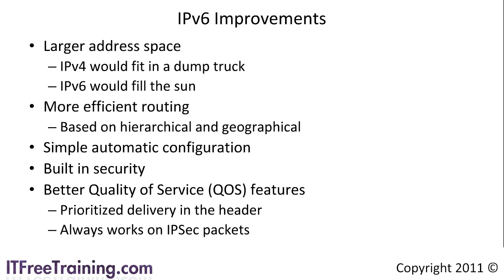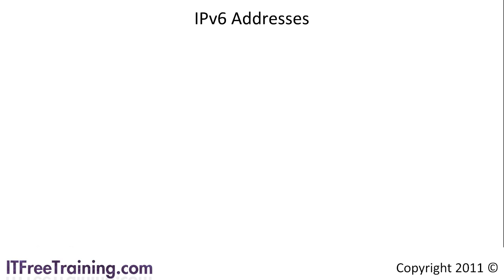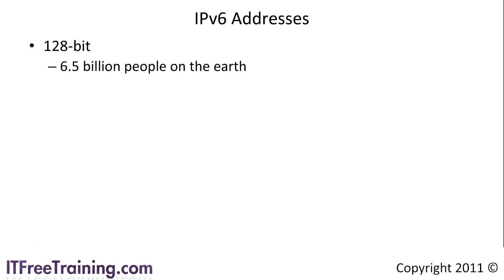As you can see, IP version 6 has a lot of great features, but in the real world it will take a long time before IP version 6 becomes the default protocol used on the internet. One of the most noticeable changes between IP version 4 and IP version 6 is the size of the address. IP version 6 uses a 128-bit address. To give you an idea of how many addresses that is, with roughly 6.5 billion people on the earth, there would be 5 times 10 to the power of 28 addresses for each person on the planet.